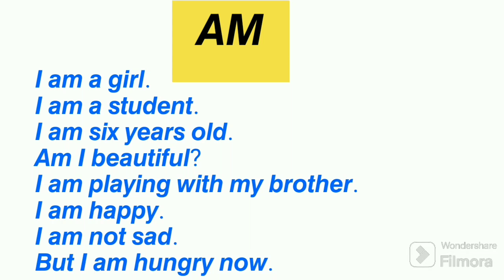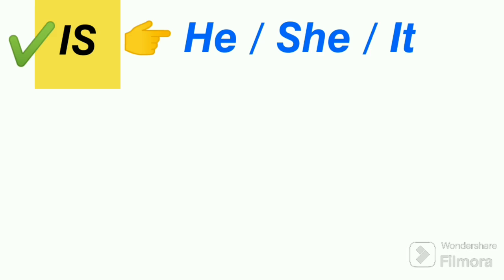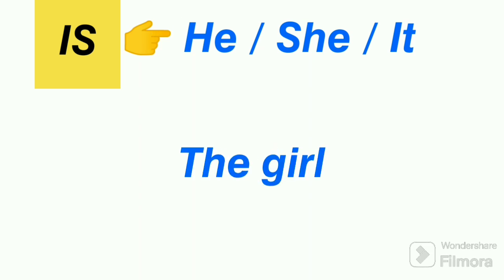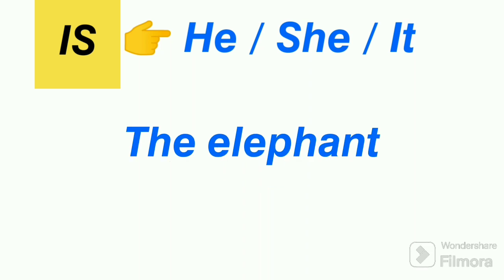But I am hungry now. We use is with the singular subjects he, she, and it, and any other third person singular subject like the boy, the girl, the elephant.